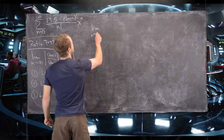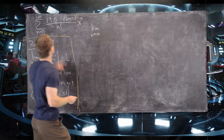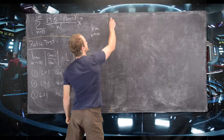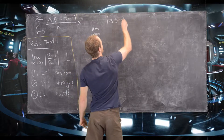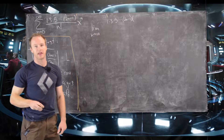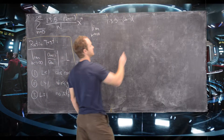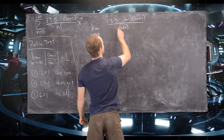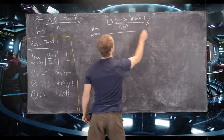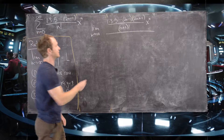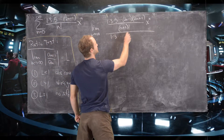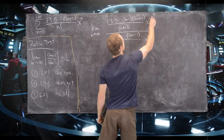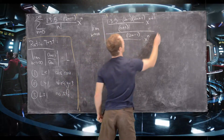So the ratio test goes as follows. We need the n plus first term over the nth term. The n plus first term is 1 times 3 times 5 up to 2n minus 1 times 2n plus 1 — the next odd number — over n plus 1 factorial, times x to the n plus 1. We divide that by the nth term: 1 times 3 up to 2n minus 1 over n factorial times x to the n, all in absolute value.